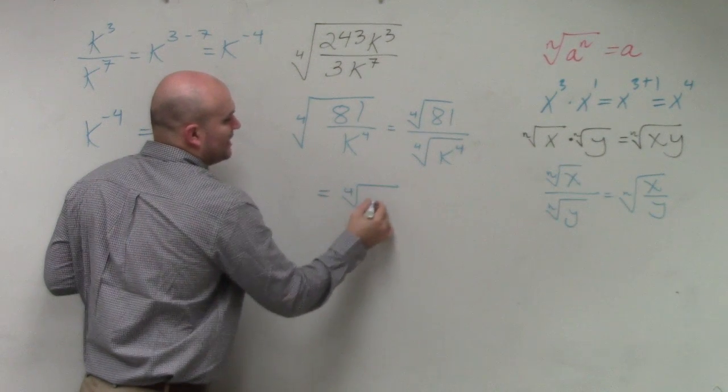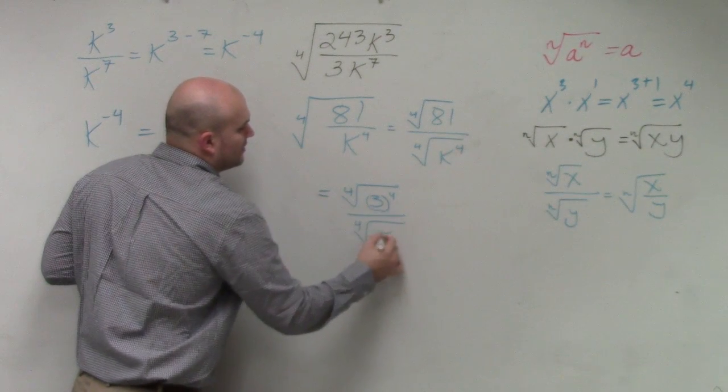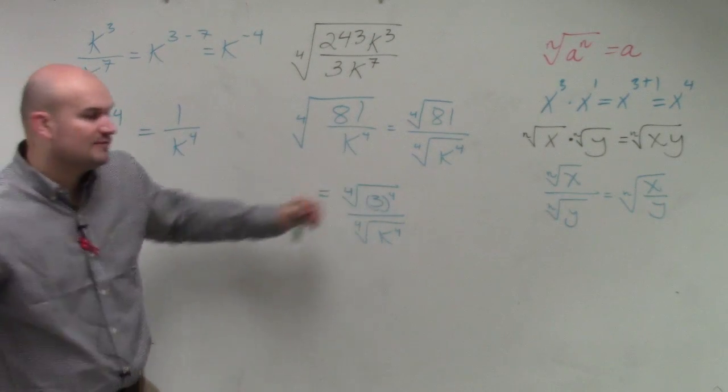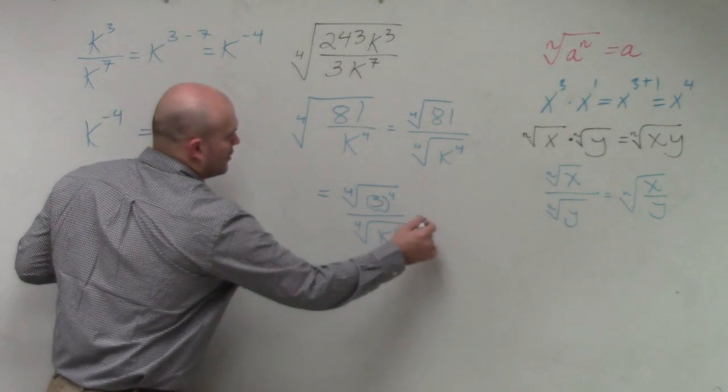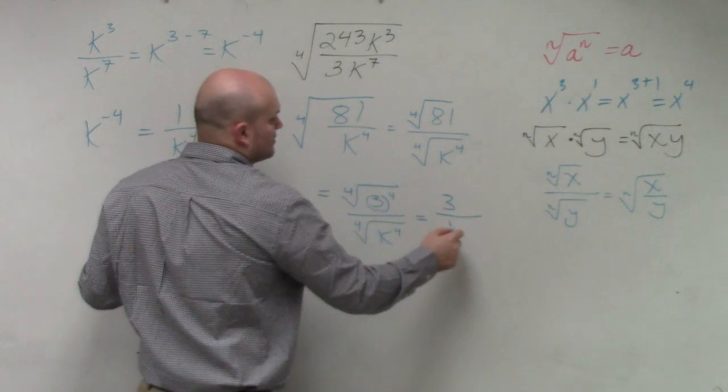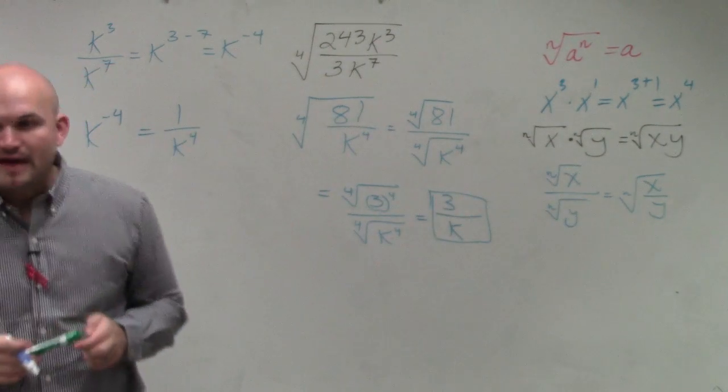The fourth root is 3 to the fourth over the fourth root of k to the fourth. So therefore, by applying the identity element, the fourth root of 3 to the fourth is 3, and the fourth root of k to the fourth is k. And that would be your final answer.